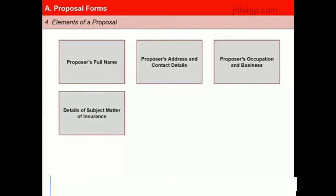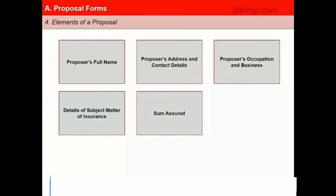Fourth, details and identity of the subject matter of insurance: the proposer is required to clearly state the subject matter that is proposed for insurance. Fifth, sum assured: it indicates the limit of liability of the insurer under the policy and has to be indicated in all proposal forms.